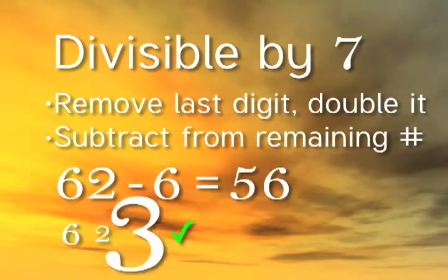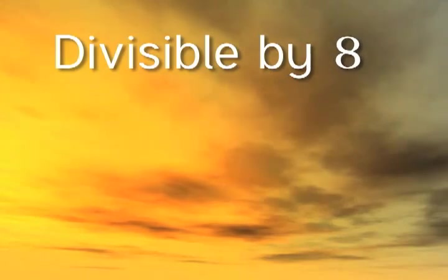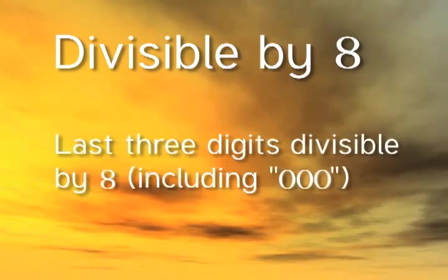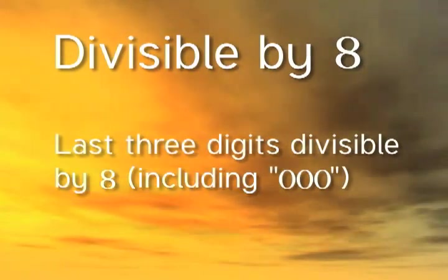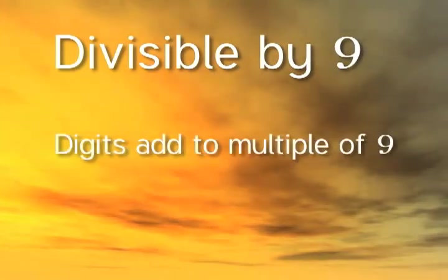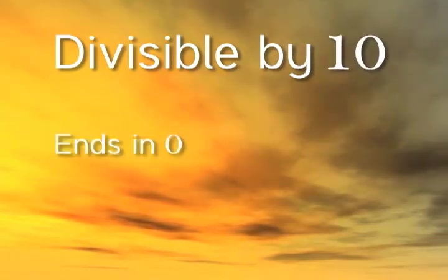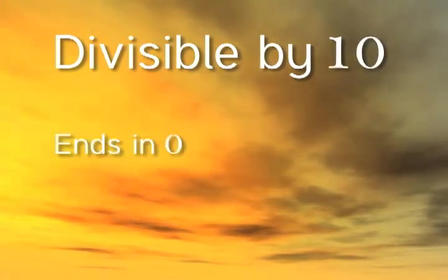A number is divisible by 8 if its last 3 digits are divisible by 8. A number is divisible by 9 if its digits add to a multiple of 9. A number is divisible by 10 if it ends in 0. Here's the test for 11.